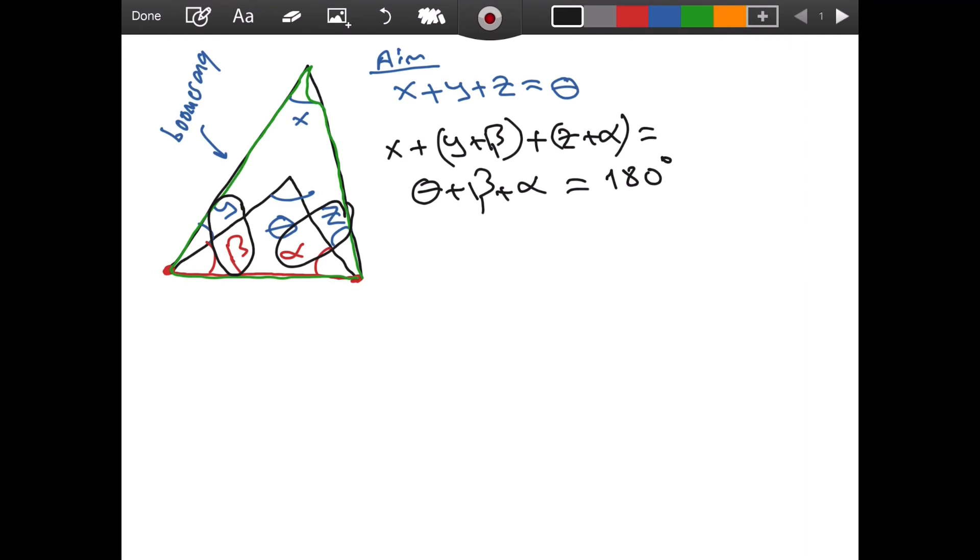This is, as I said, equal to 180 degrees. Now let's subtract these equations from one another. So when we do that, we have 180 degrees minus 180 degrees, which gives us zero.